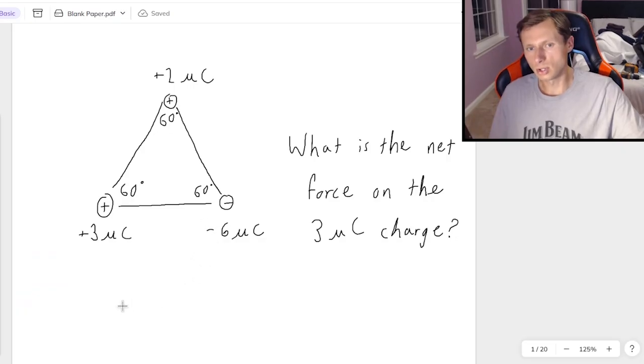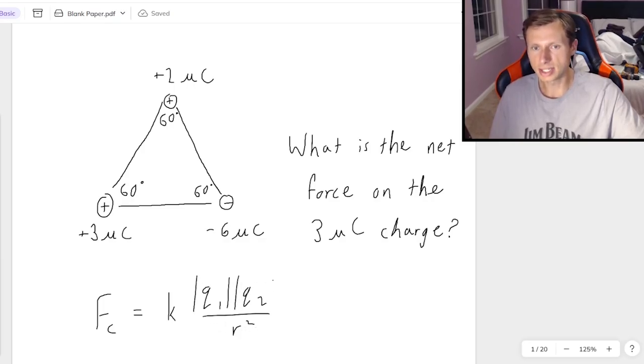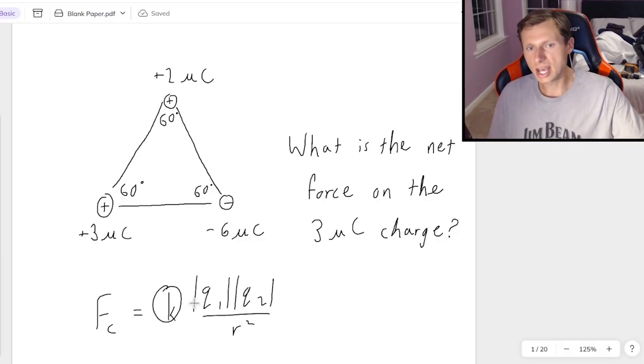So if you remember what Coulomb's Law says, F sub C equals k times q1 times q2 over r squared. Usually you'll see me put absolute values here, because I deal with the direction, in other words the positive or negative sign, separately.